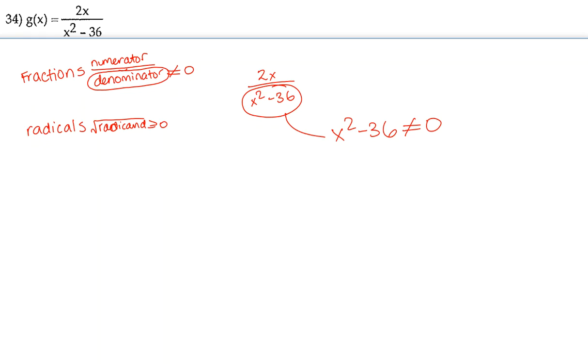And the rest of the x's are going to be in our domain. So here, let's solve for x. First thing I'm going to do is bring this 36 over to the right-hand side by adding it to both sides, giving me x squared cannot equal 36.